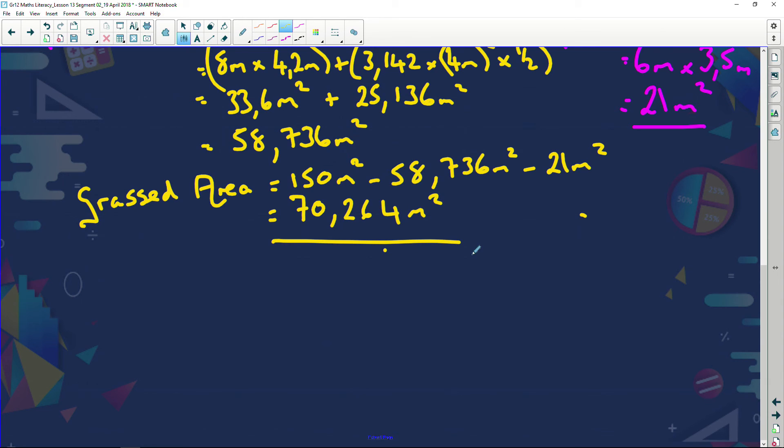Now folks. So what we've done, we found the area of our pool. We found the area of the house. We found, we were told, the area of the whole yard. We've subtracted from the yard the house and the pool, and the leftover area needs to be grassed.